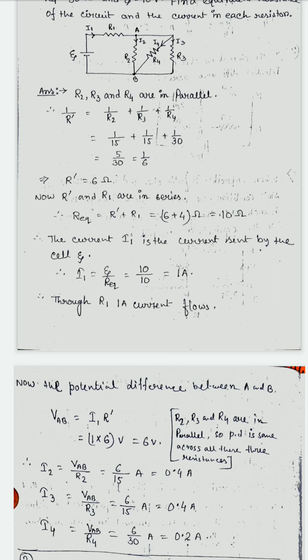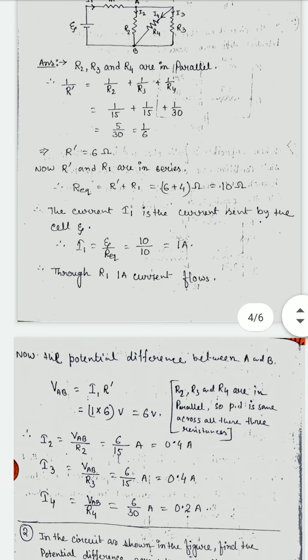I3 = VAB/R3 and I4 = VAB/R4. Because R2 and R3 have the same value, the current through them is the same — both are 0.4 amperes — and I4 = 0.2 amperes. As a verification, adding all currents: I2 + I3 + I4 = 0.4 + 0.4 + 0.2 = 1 ampere, which equals the main current. This is the checking process — after adding all branch currents we should get the main current, since the main current divides across the parallel resistors.